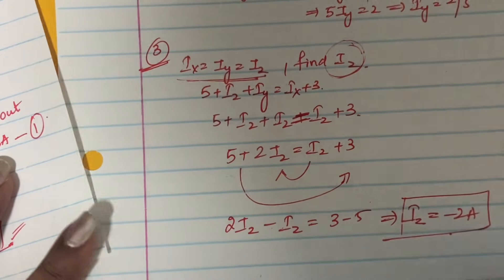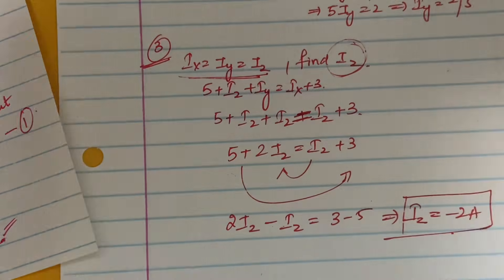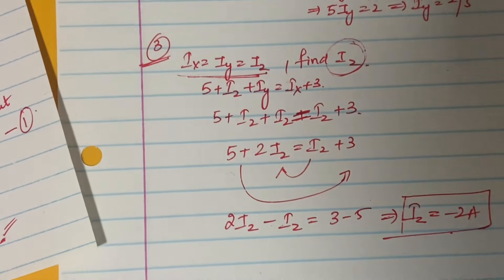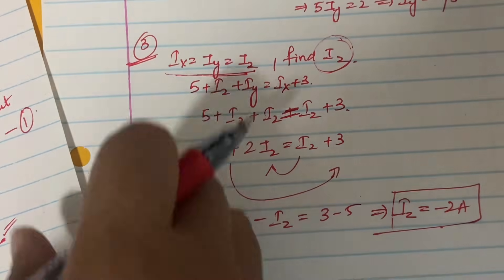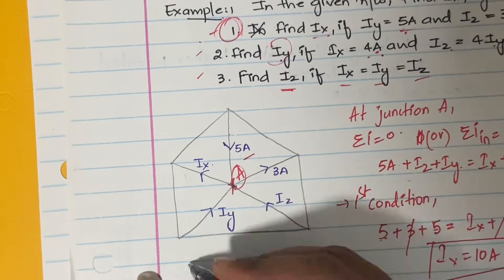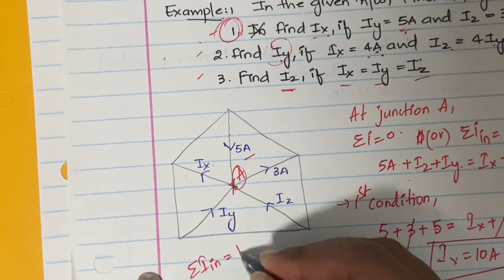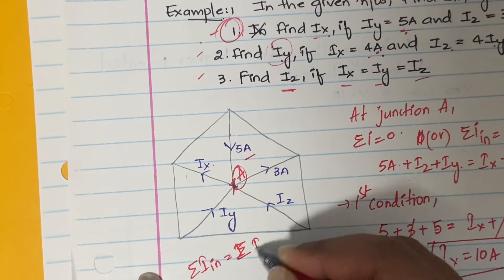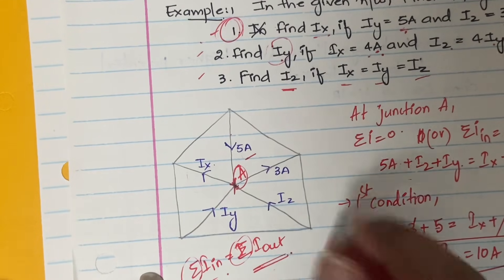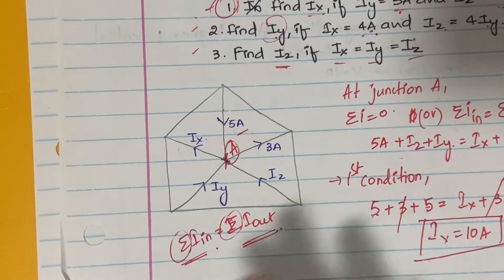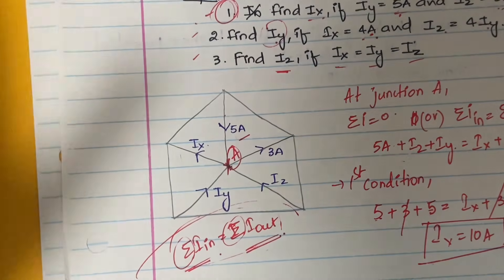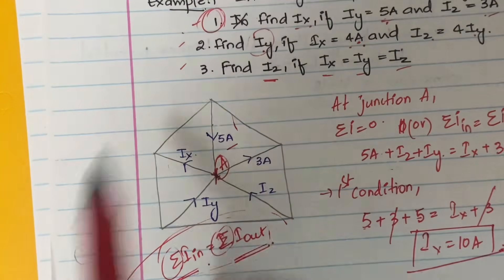What does minus 2 amperes mean? A negative current simply means the current is flowing in the opposite direction to what we assumed. This is how you solve Kirchhoff's Current Law problems. At a given junction, the sum of incoming currents should equal the sum of outgoing currents — just this one logic you need to remember to solve KCL problems.